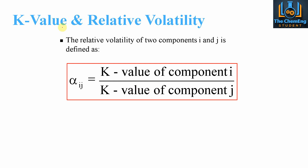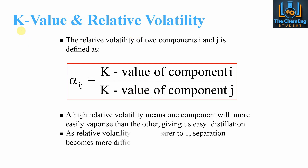Most commonly, we talk about relative volatility more than the K value. A high relative volatility means that one component will be more easily vaporized than the other, giving an easy distillation. As the relative volatility moves near one, the separation becomes extremely difficult because the K values become very similar. The more polarized the K values, the better the relative volatility, which is relative to the conditions the environment is set up for.